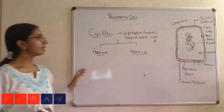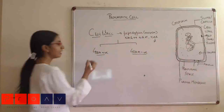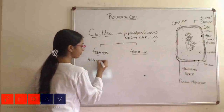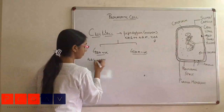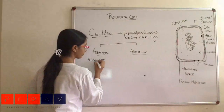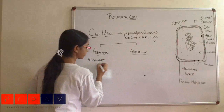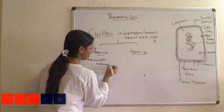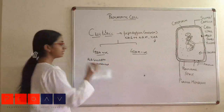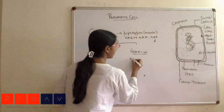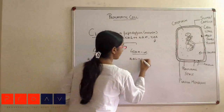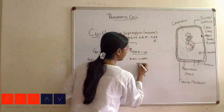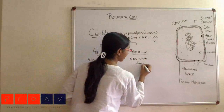In gram-positive bacteria, we have the NAG and NAM residues which are cross-linked. In gram-negative bacteria, the NAG and NAM residues are directly linked instead of cross-linked.